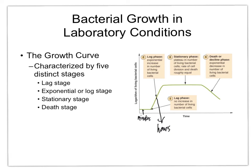Bacteria that die give up their nutrients, and those nutrients are what allow other bacteria to continue to grow and thrive. Stationary phase for E. coli, depending on circumstances, can last days to weeks. Often you'll take bacteria in stationary phase and put them in a cooler environment to slow down their metabolism, which can stretch out that stationary phase for much longer.